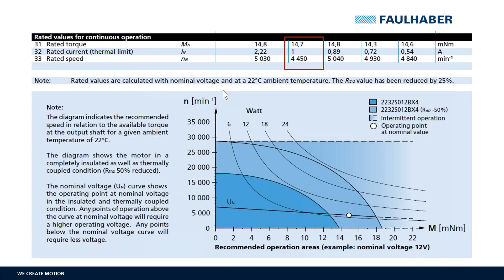When we scroll down a bit, we can see the rated values for continuous operation for the different winding types. I will use the 12 volt winding type as an example. So let's keep the 14.7 millinewton meter rated torque and the 4450 rpm in mind — we will get back to this in a second.